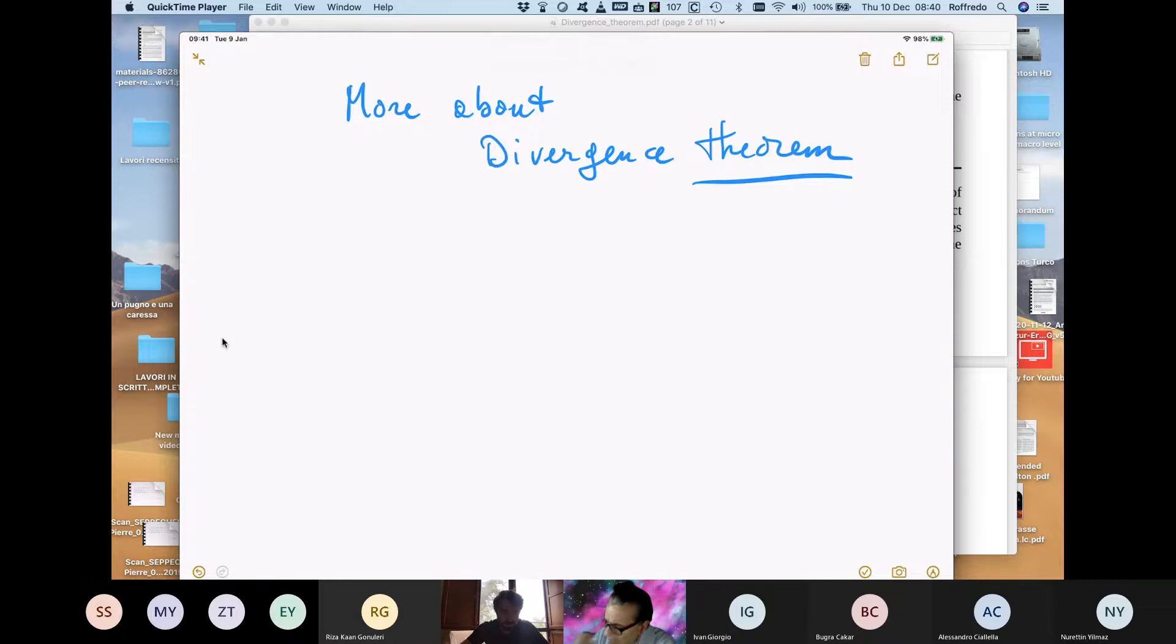Now, as I told you, I want to repeat this. Let us start with R3, so a three-dimensional volume. And we have a field, a vector field V_i defined in this region.